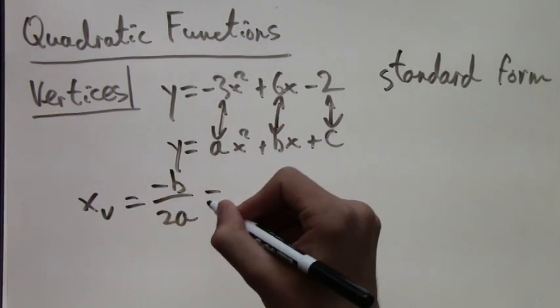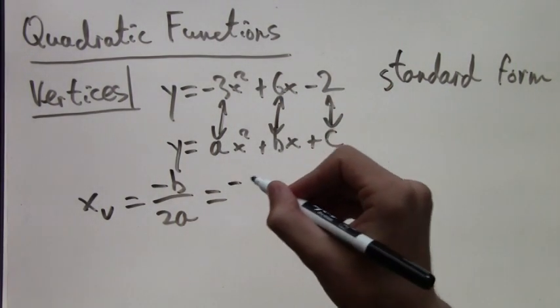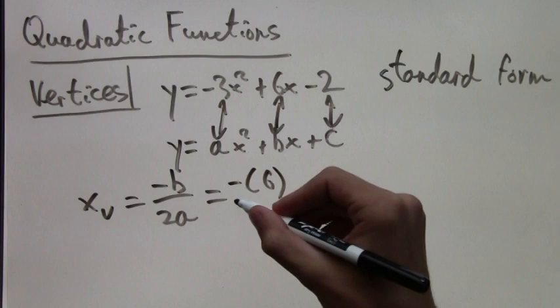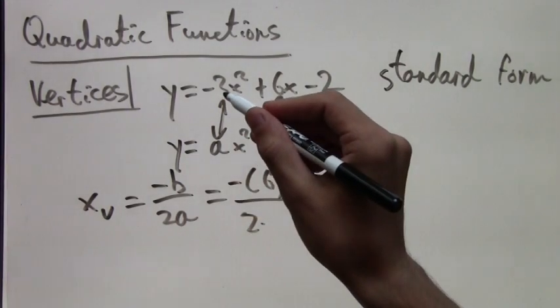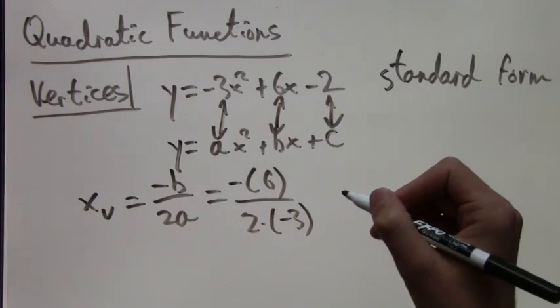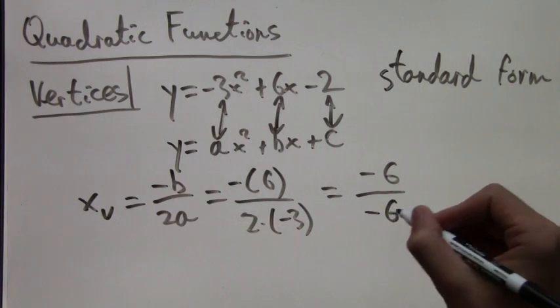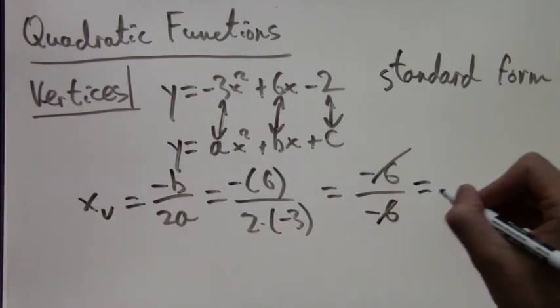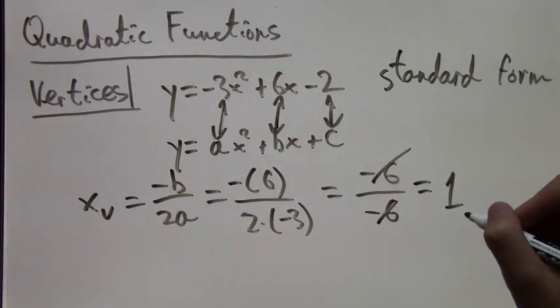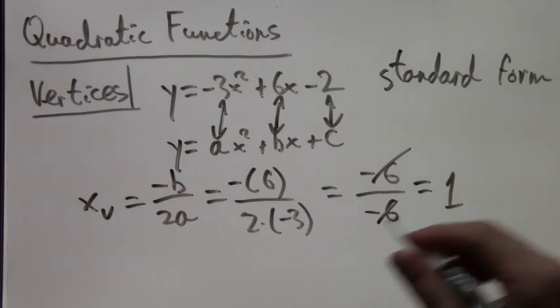And the formula is that the x-coordinate of the vertex is negative b over 2a, or in our case, negative 6 over 2 times negative 3. We just took the numbers right out of the equation and plugged them into this other equation. So we get that the x-coordinate of the vertex is 1.